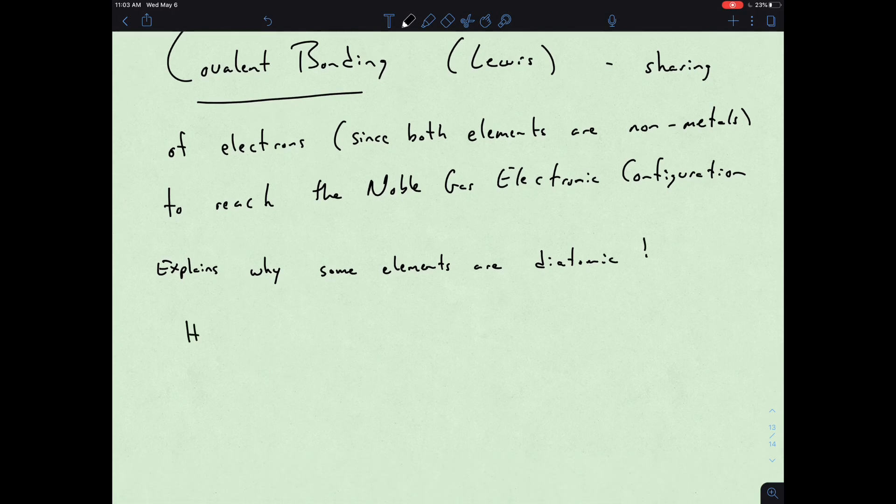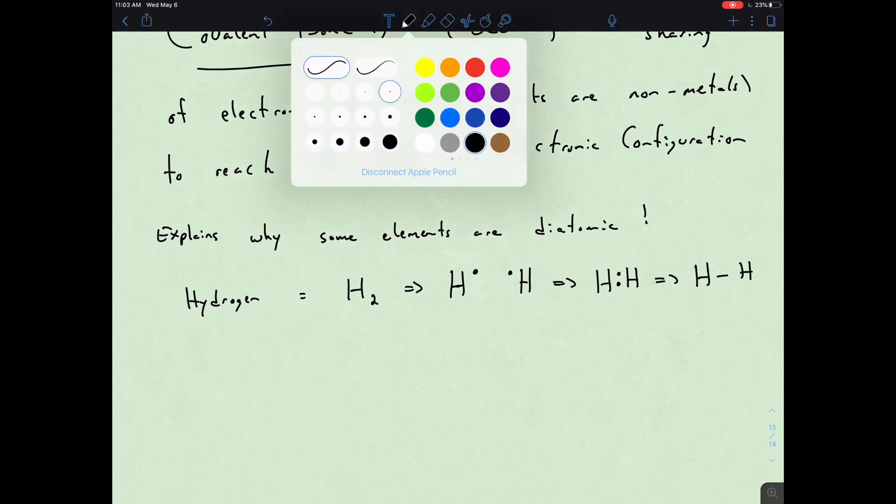Hydrogen is equal to H2, and that's because each hydrogen atom in its Lewis dot sense has one electron, and if they share that one electron together they end up with the hydrogen molecule.